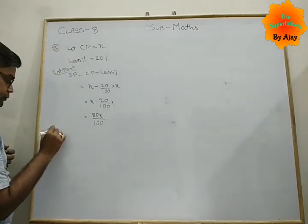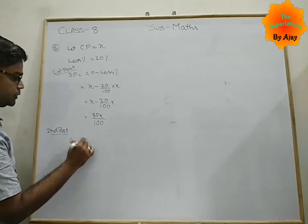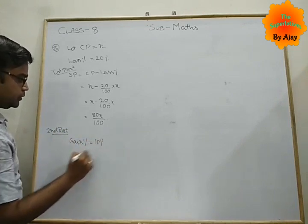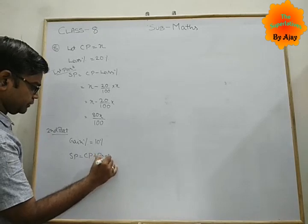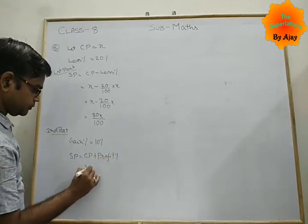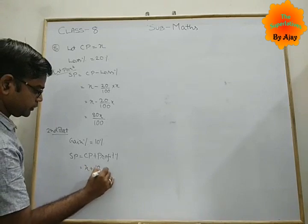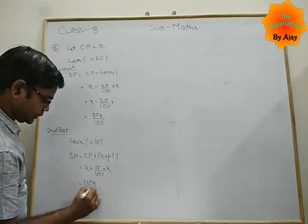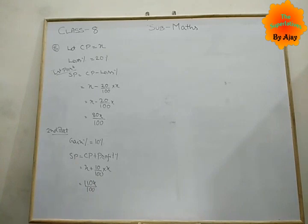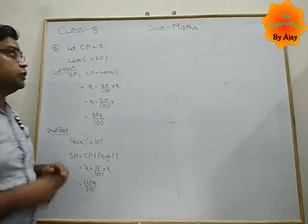In this case, CP is greater than SP. So it's x minus 20 upon 100 x. When we simplify as we discussed in class 7, 100x minus 20x upon 100. This is your first selling price.